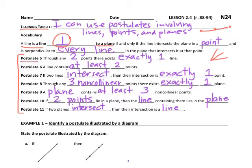Postulate 5 says through any two points there exists exactly one line — so if there are two points, there is only one line through those two points. Postulate 6 says a line contains at least two points. These two are very close in meaning: postulate 5 starts with two points and gives you a line, while postulate 6 starts with a line and tells you there are two points on it.